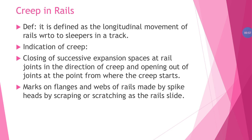It is the longitudinal movement of the rails with respect to sleepers in the track. The indication of creep intent is the closing of successive expansion spaces at the rail joints in the direction of creep, and opening out the joints at the points where the creep starts.